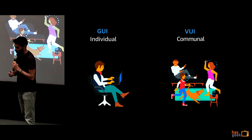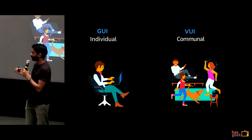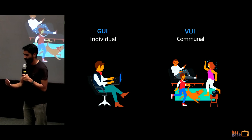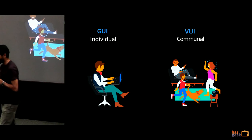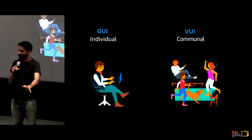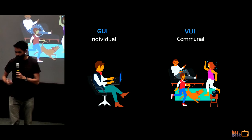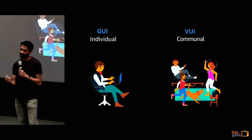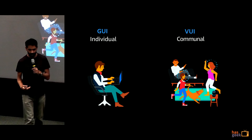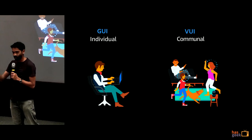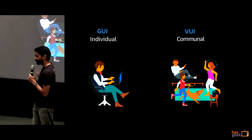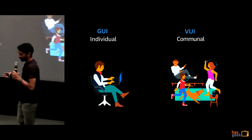Finally, when you interact with a screen-based device — especially a mobile phone — it's a very individual interaction. Even at a social gathering if someone asks about Virat Kohli's ODI hundreds, people pull out their phones individually. But voice is a far more communal interaction. Alexa and other smart speakers are designed to be in your home or workplace where other people are around and can hear what's happening. It's a fairly communal experience. These are the fundamental differences between a VUI and a GUI.